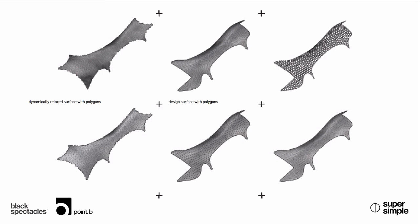A question came in going back to dynamic relaxation: did Form Inc. use Kangaroo for that, or some other structural analysis software? I believe they used a different engine — almost 100% they did not use Kangaroo. We used Kangaroo on this project, but that was not their tool. The left image in these two sets is the output from Form Inc. — those are the dynamically relaxed surfaces. I can ask Keon if someone wants to email me; I'll get them connected.